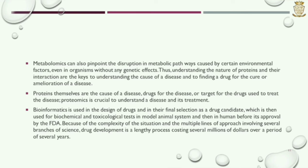Proteins themselves are the cause of a disease, drugs for the disease, or targets for the drugs used to treat the disease. Proteomics is crucial to understand a disease and its treatment. Bioinformatics is used in the design of drugs and in their final selection as a drug candidate, which is then used for biochemical and toxicological tests in model animal systems and then in humans before FDA approval. Because of the complexity of the situation and the multiple lines of approach involving several branches of science, drug development is a lengthy process costing several millions of dollars over a period of several years.